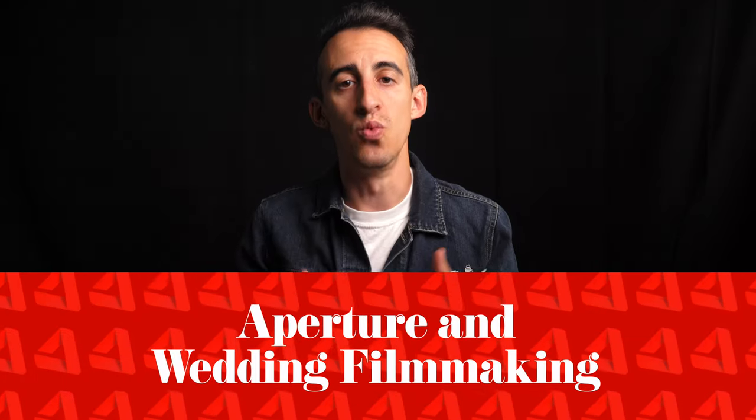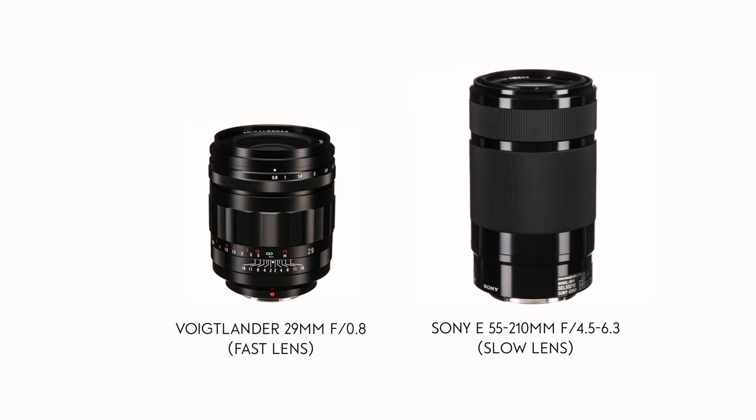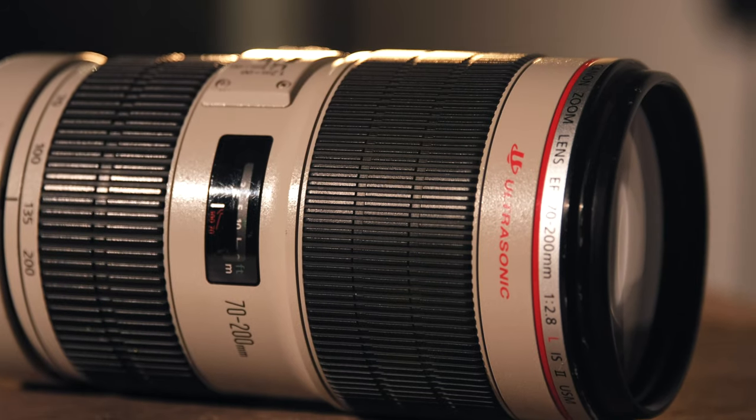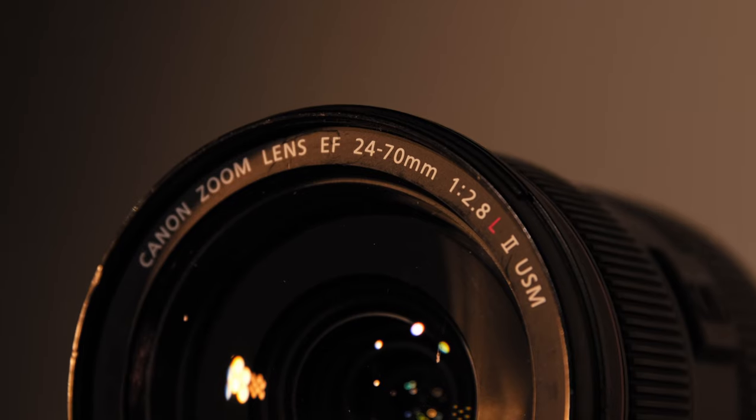Now let's apply this to weddings and being a wedding filmmaker. For weddings, we generally recommend getting lenses that are considered fast, which means they have a low aperture available — something like f1.2 or maybe f2. This doesn't mean you should always use those settings, but it's nice to have them available in certain lighting situations. These will be more easy to find with prime lenses, or lenses that don't zoom. For zoom lenses, we still recommend fast apertures, but perhaps just as important, we recommend fixed apertures, as you don't want your settings to change when you zoom in, especially in a fast-paced setting like a wedding.